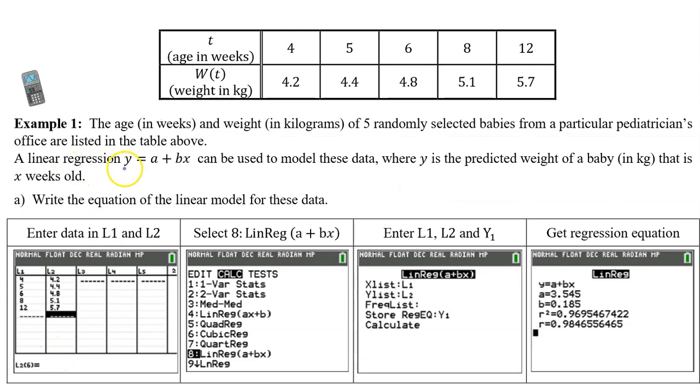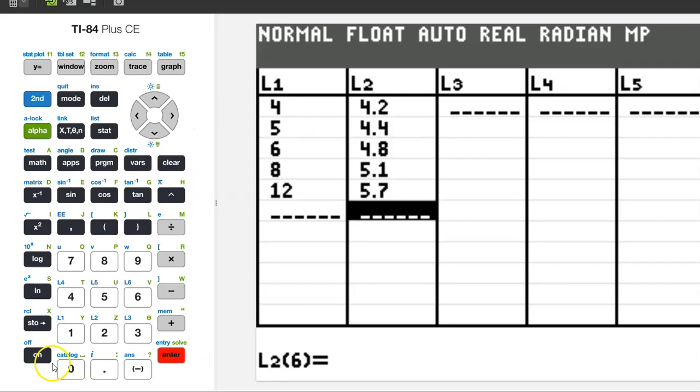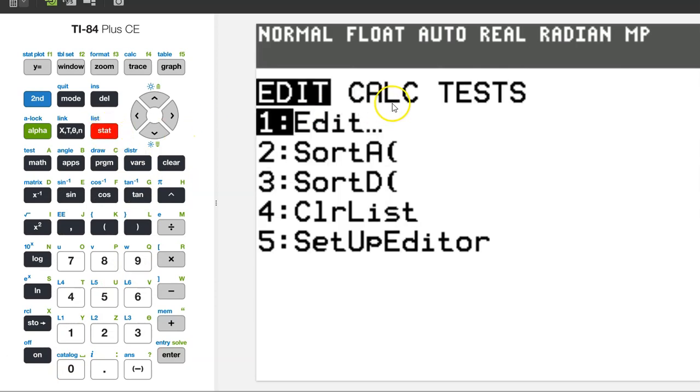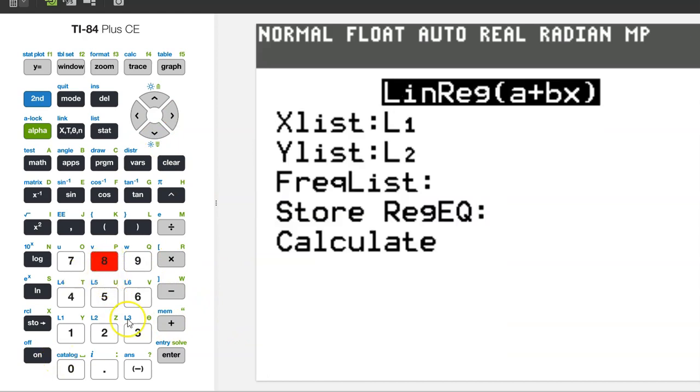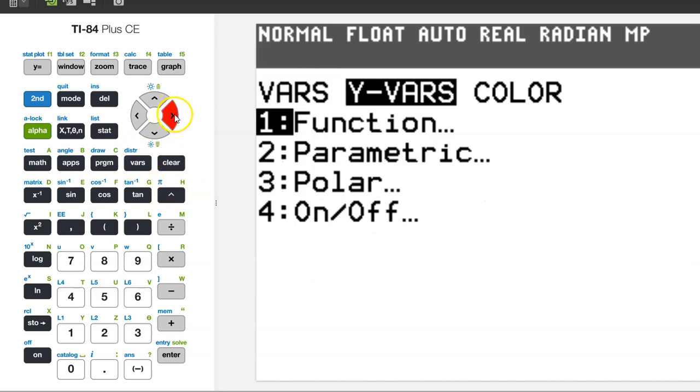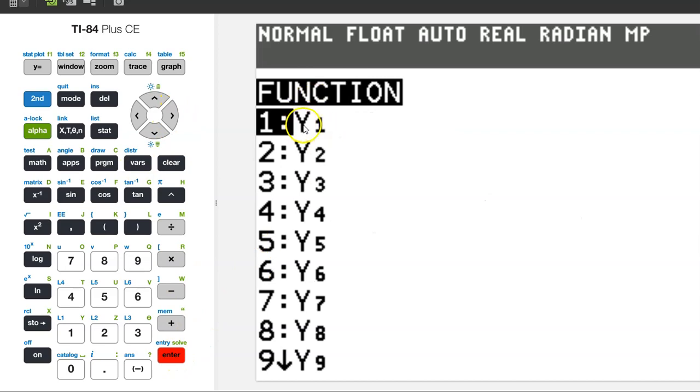We were told to use regression model y equals a plus bx. To select a regression model, hit the stat button and arrow over to the calc menu. Here they all are. There are two different linear models, and we were asked to use option 8. So you can either arrow down to option 8 or you can just type the 8. Make sure your x list is set to L1 and your y list is set to L2. We would like to store the regression equation that is about to be generated into Y1. So come down to where it says store regression equation, and hit vars, yvars, enter, and enter for Y1.